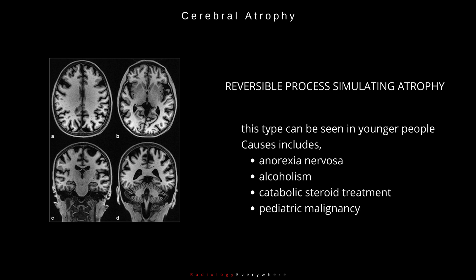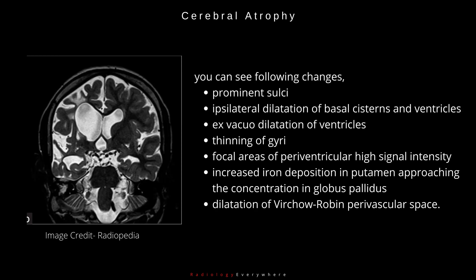C. Reversible process simulating atrophy. This type can be seen in younger people. Causes include anorexia nervosa, alcoholism, catabolic steroid treatment, and pediatric malignancy. You can see the following changes: prominent sulci, ipsilateral dilatation of basal cisterns and ventricles, ex-vacuo dilatation of ventricles, thinning of gyri, focal areas of periventricular high signal intensity, and increased iron deposition in the putamen approaching the concentration in the globus pallidus.